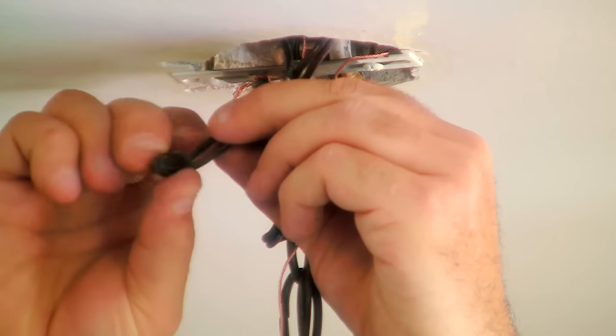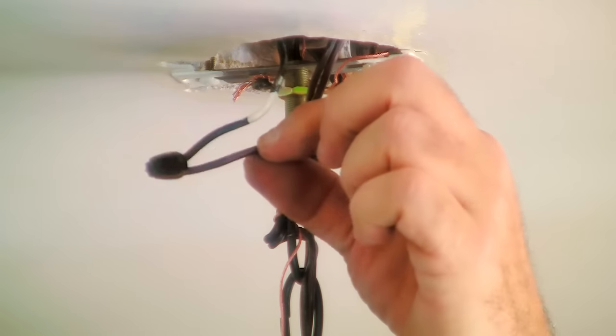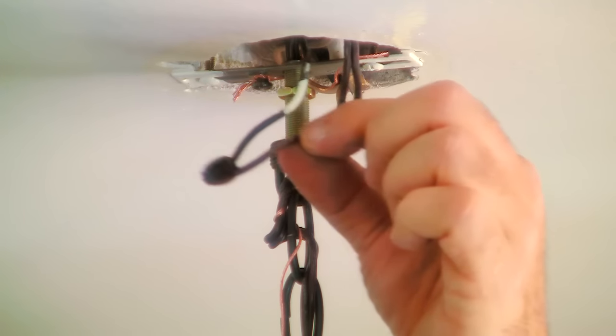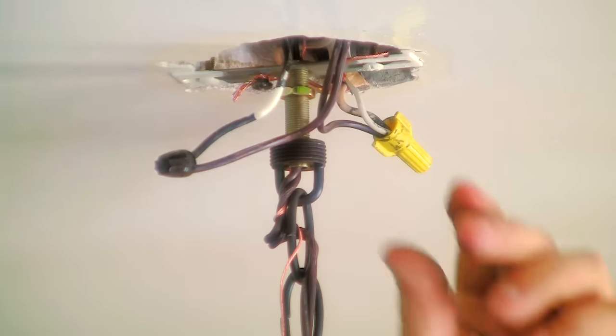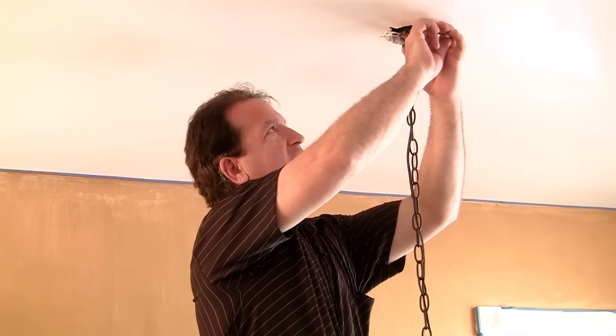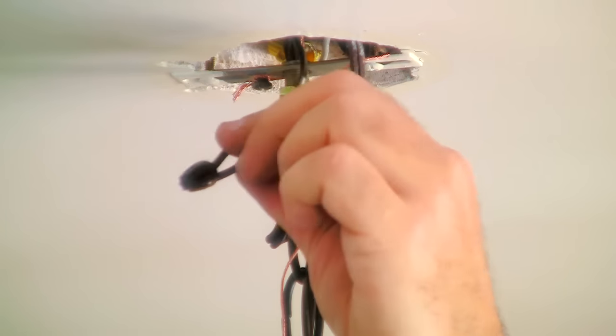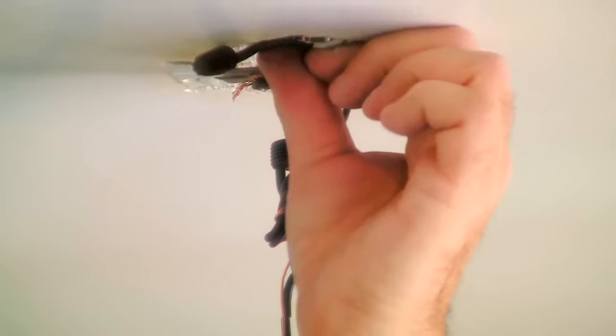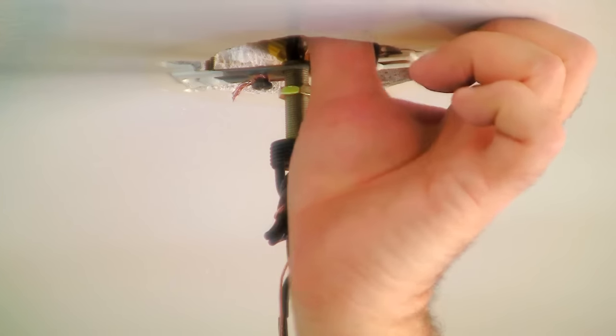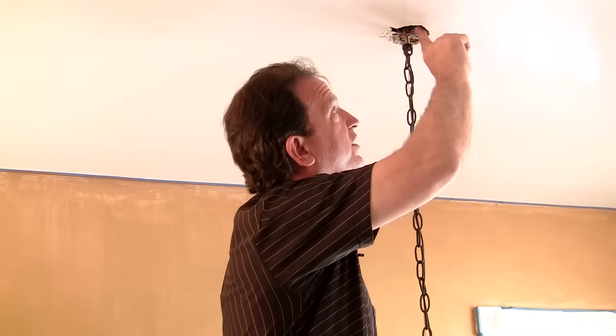At that point, what we're going to do is take our wires and push them back up into our junction box here. And then once again, just go ahead and check and make sure everything looks wired and nothing's loose.